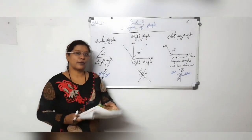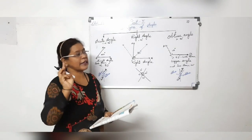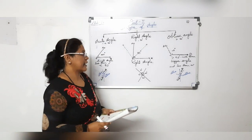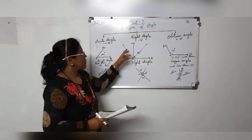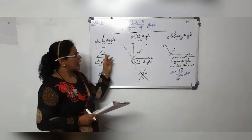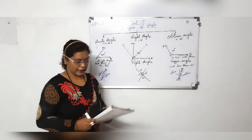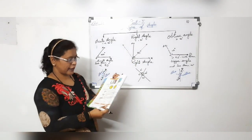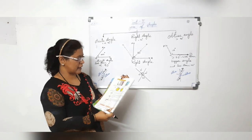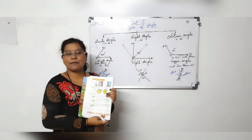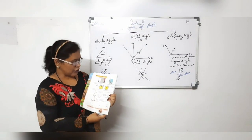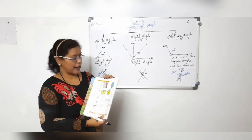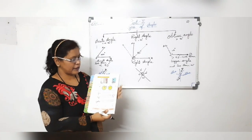In the previous video I told you that there are three basic types of angles which you are going to learn in this fourth standard. The first one is the right angle, acute angle, and obtuse angle. Now we will see in your textbook — fourth standard, Maharashtra State Board — on page number 2, right angle, obtuse angle, and acute angle are given.